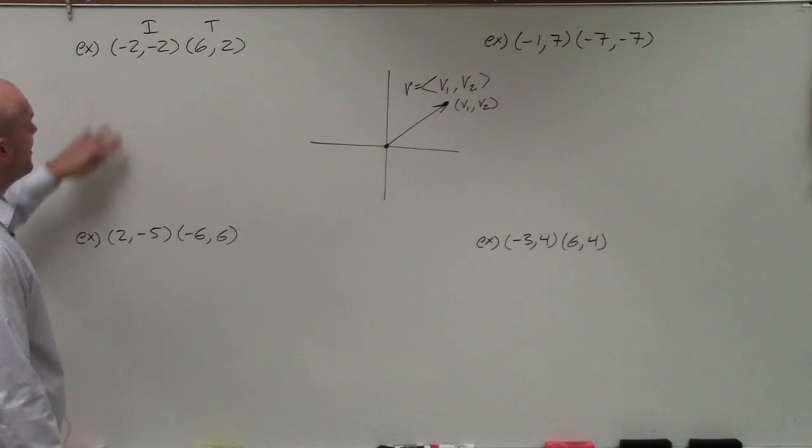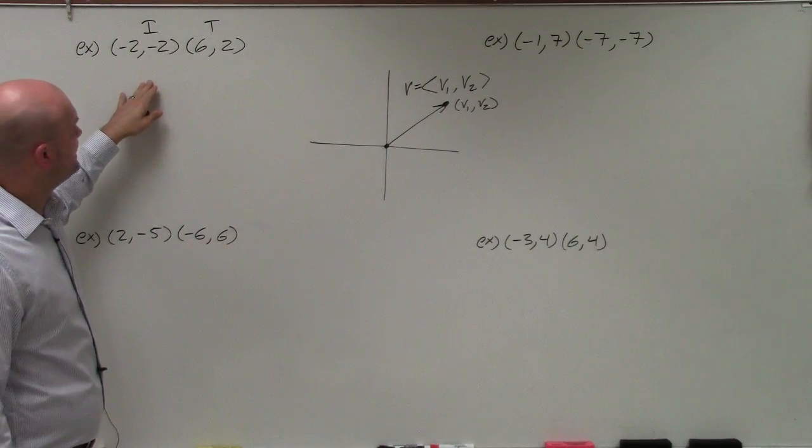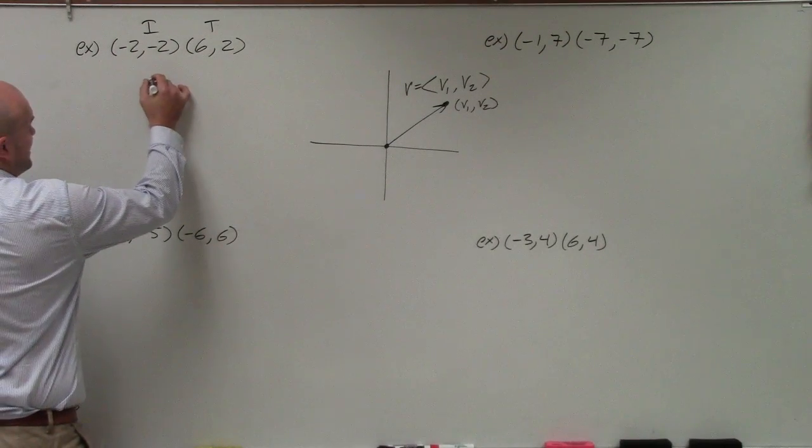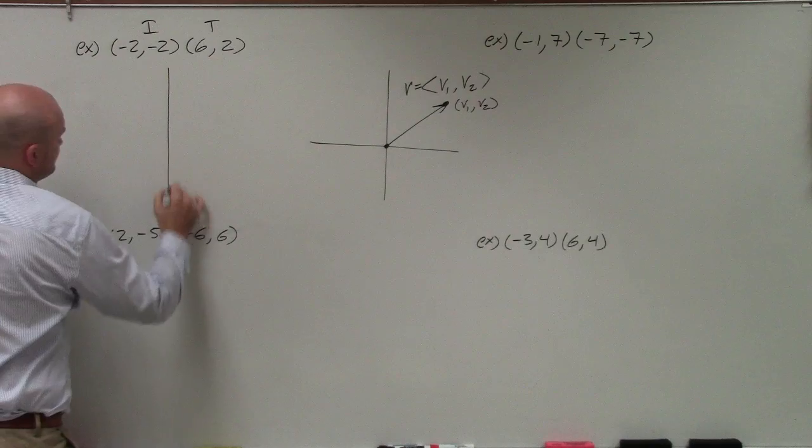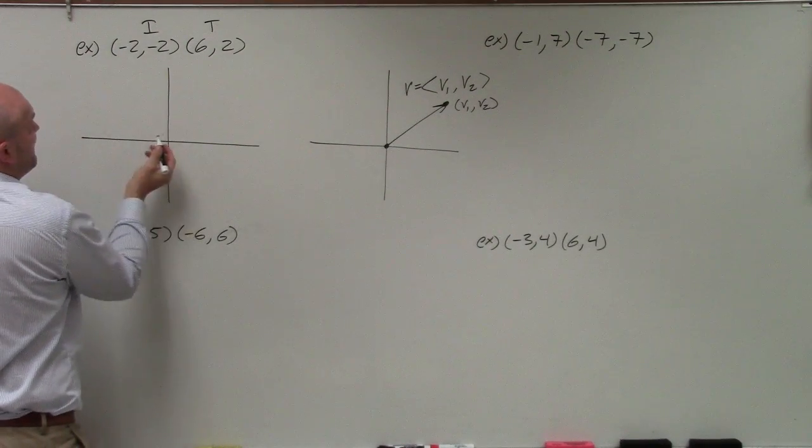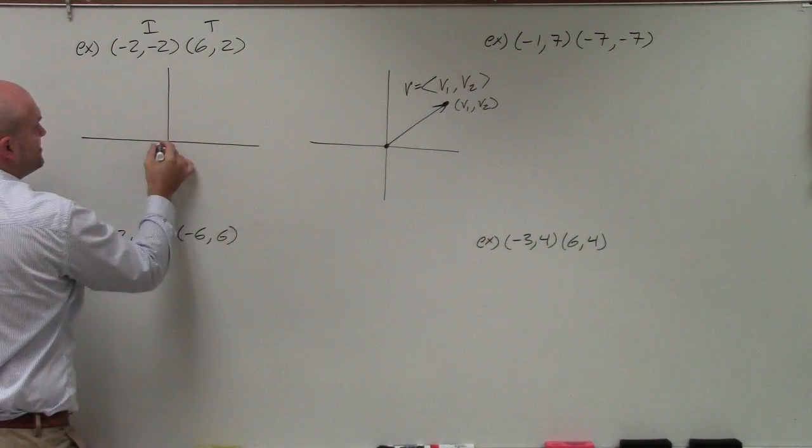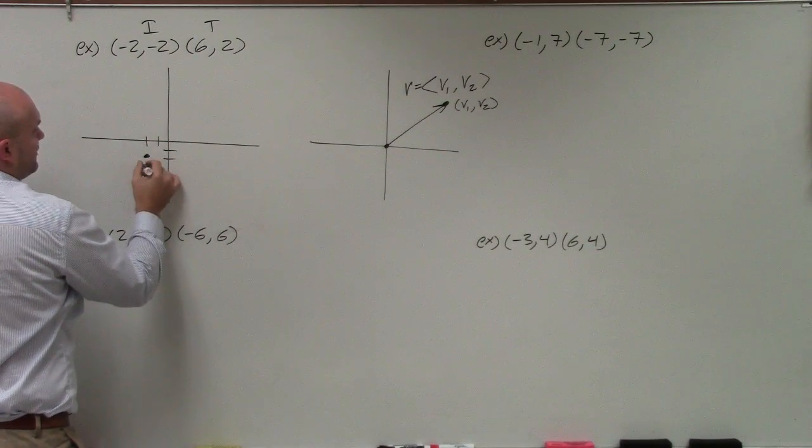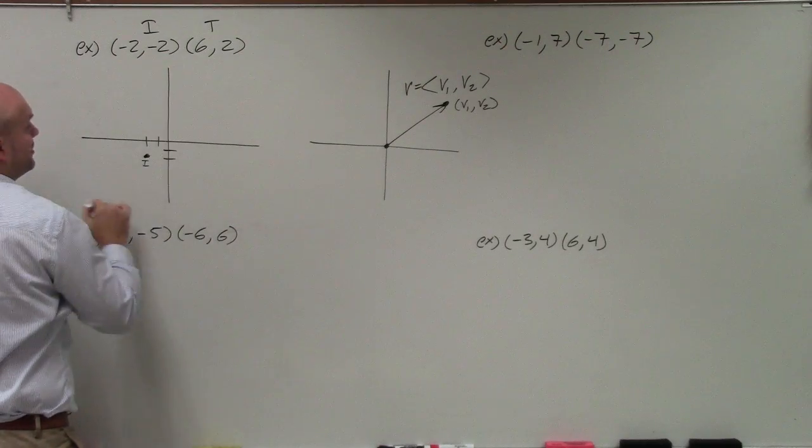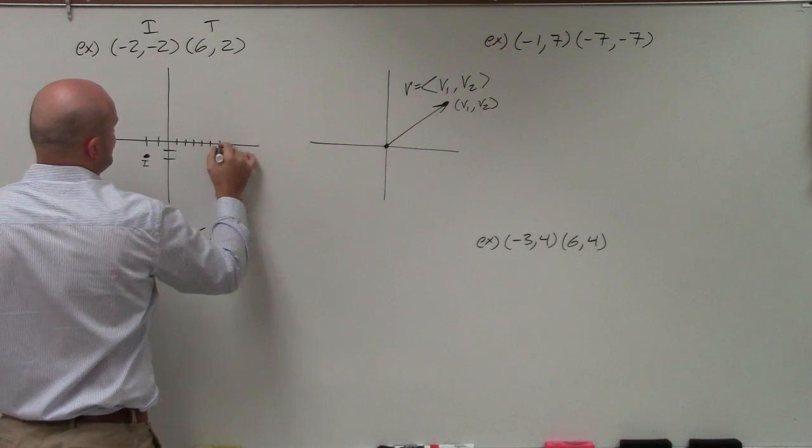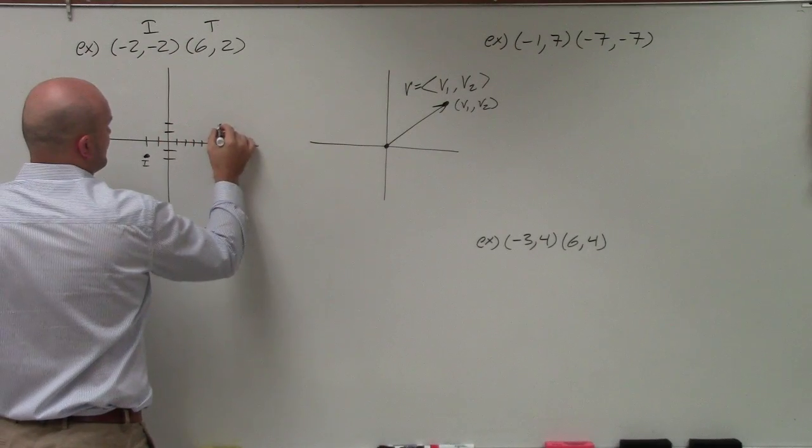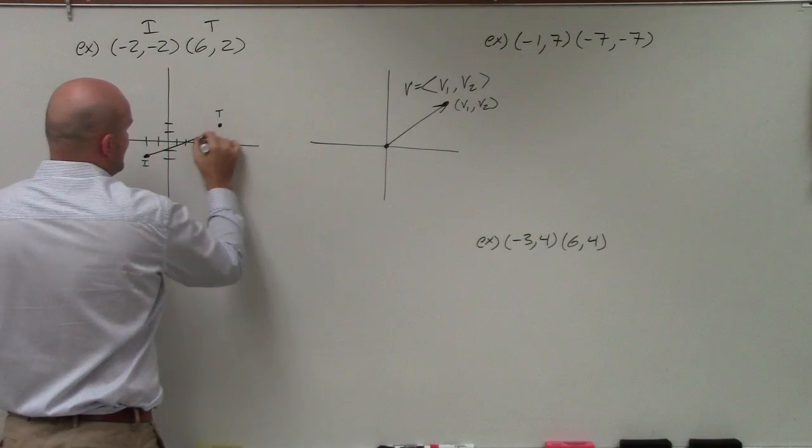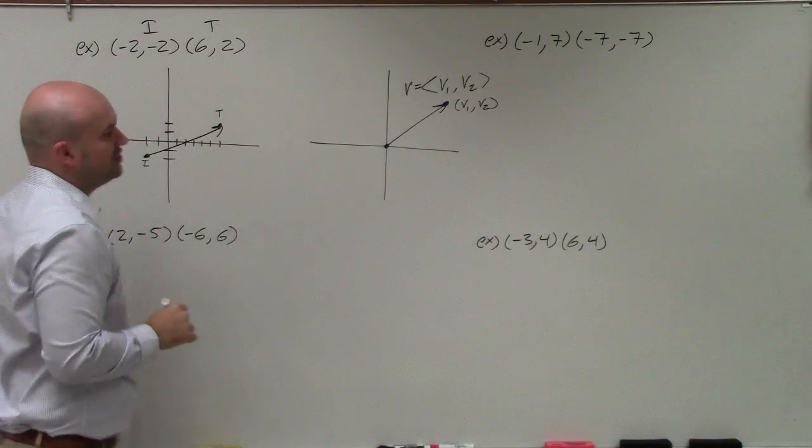However, in this case, we don't have an initial point at 0, 0. And our terminal point might not be the same terminal point that we have. So what we're going to do is let's sketch what this graph looks like. So my vector is at negative 2, negative 2. So 1, 2, 1, 2. So that's my first point. And I'll call that the initial point. And then my terminal point is at 6, 2, 1, 2, 3, 4, 5, 6, 1, 2. That's my terminal point. And you can see here, my vector is going to look something like that.